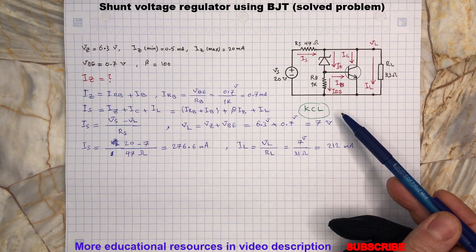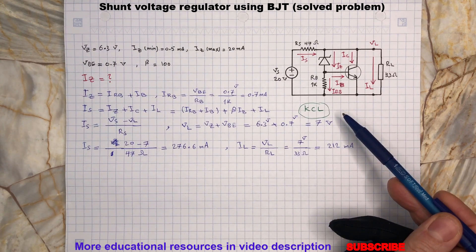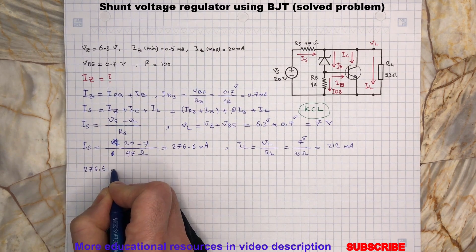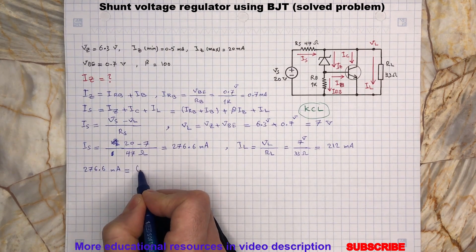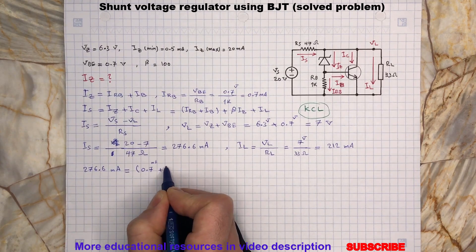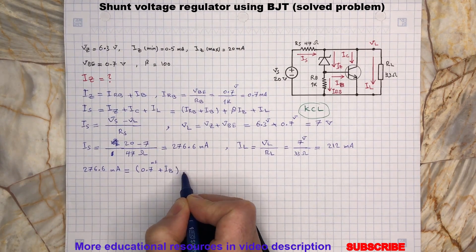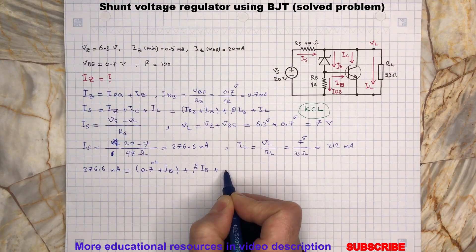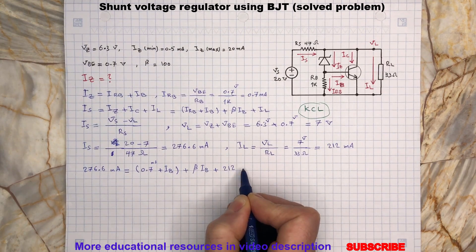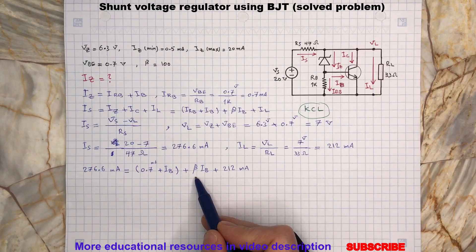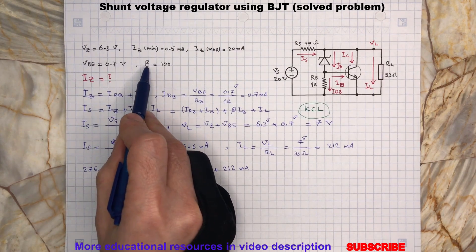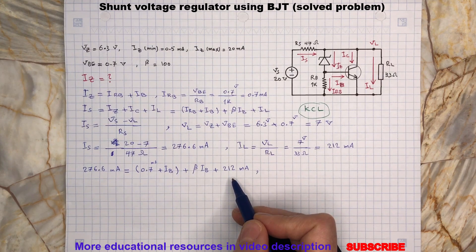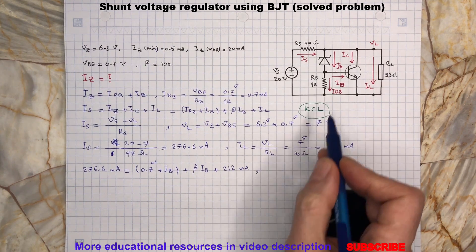Let's put all the parameters in the KCL equation. Beta here is 100, and we solve this equation to find IB base current.